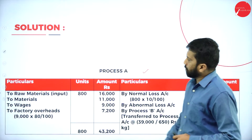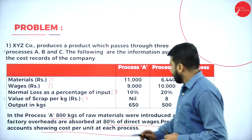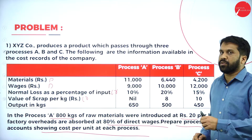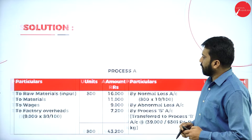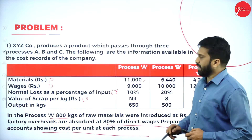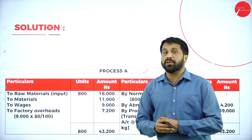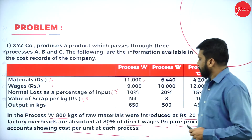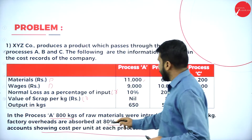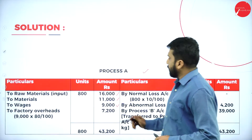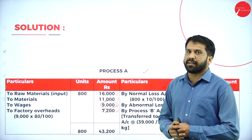For Process A, raw material is 800 kg at Rs. 20 each, so 800 × 20 = Rs. 16,000. Wages are also given. Factory overhead is 80% of direct wages: direct wages are Rs. 9,000, so overhead = 9,000 × 80% = Rs. 7,200. The debit side is now complete.